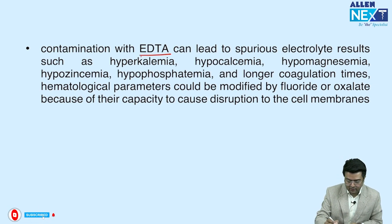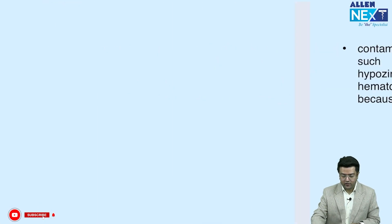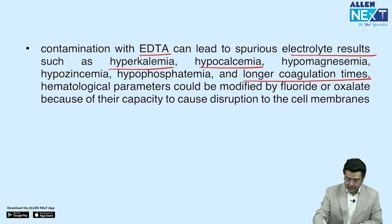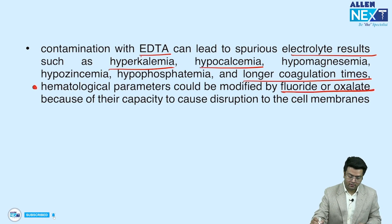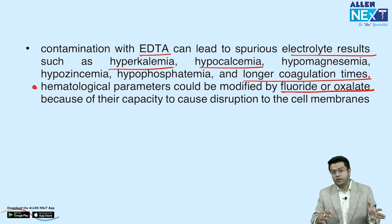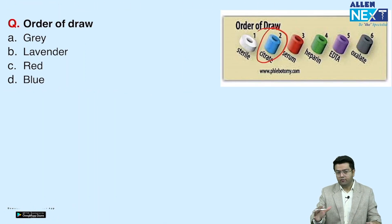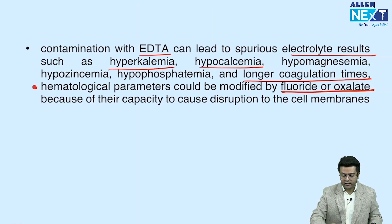If we take the EDTA first, there will be spurious electrolyte results such as hyperkalemia, hypocalcemia, and longer coagulation time. That is why for PT, for example, we take the blue one initially. Hematological parameters could be modified by the fluoride or oxalate, which is why fluoride and oxalate are taken last. Remember this basic sequence to prevent contamination and spurious results.